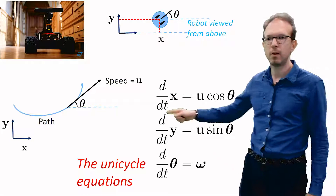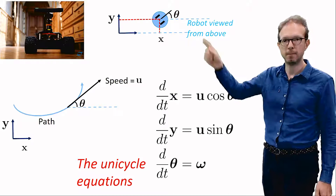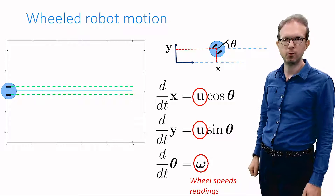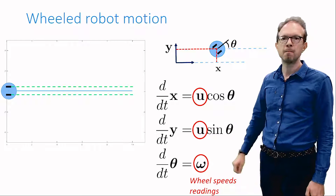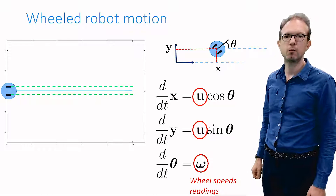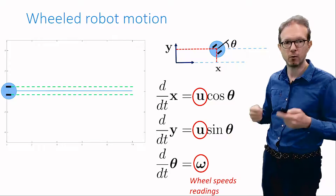The quantity u may be viewed as an imperfect input, which is measured by the wheel speed sensors. The turning rate, omega, of the robot's orientation is another imperfect input, also measured by the wheel speed sensors. U is obtained as an average of the wheel speed, whereas omega is obtained as a difference. In practice, sensors are not perfect — they are noisy.